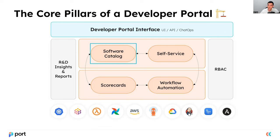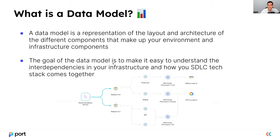Since today we'll be talking about how to create a data model and what it should contain, the primary layer we're focusing on is the software catalog. So what is a data model? A data model is a representation of the layout and architecture of the different components that make up your environment and infrastructure. The goal of the data model is to make it easy to understand the interdependencies in your infrastructure and how your SDLC tech stack comes together — creating a model showing how the different pieces connect, their dependencies, and interdependencies.